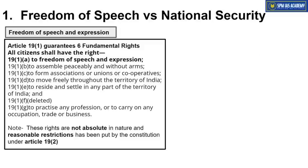The Indian Constitution guarantees six fundamental rights under Article 19(1), which talks about the right to freedom of speech and expression. However, these rights are not absolute — 'absolute' means they are not valid or do not hold true in all circumstances.